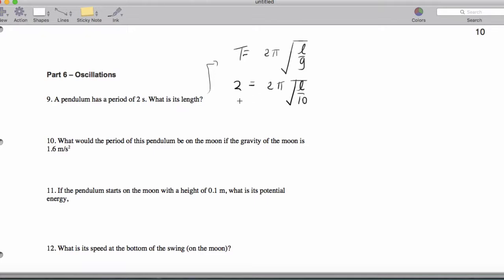So I'll simplify right here. 2 equals 6.28 because that's 2 times π times square root of L over 10. Continuing here. 2 divided by 6.28 equals square root of L over 10.